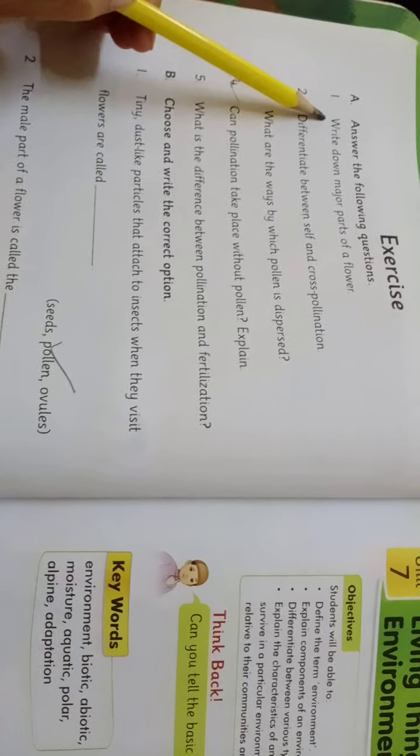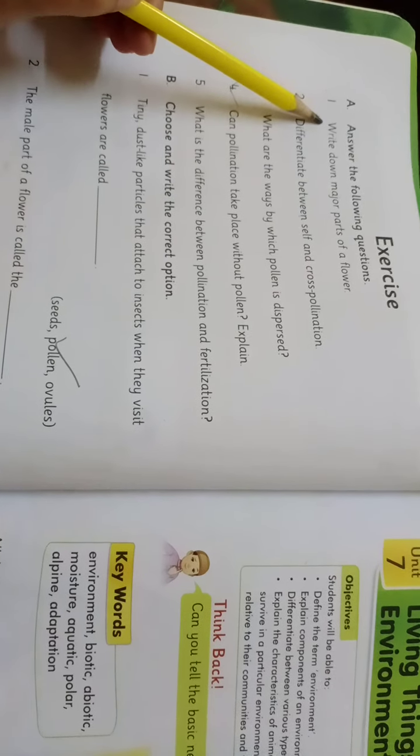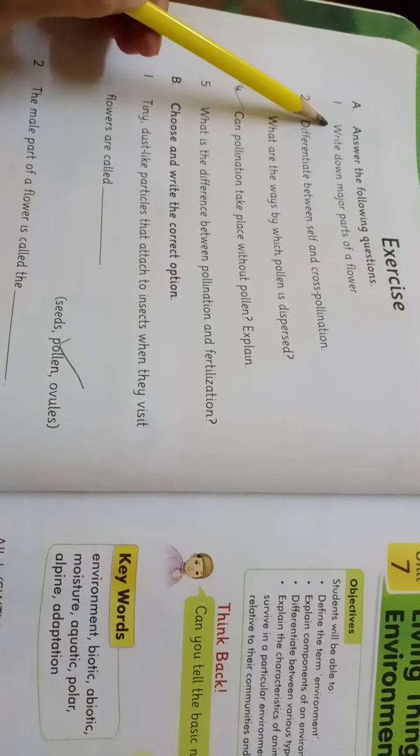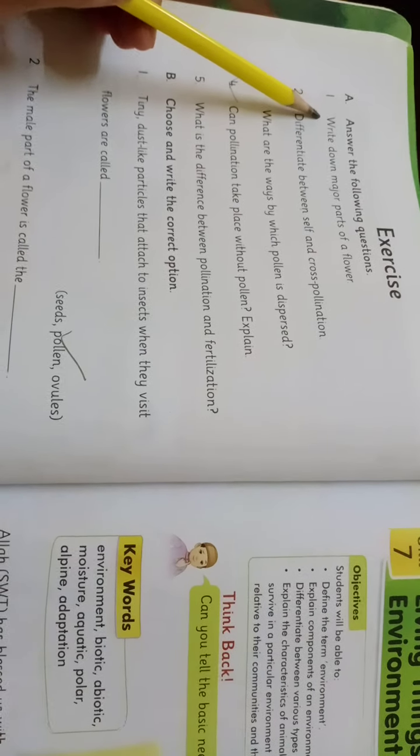So the first question is: write down major parts of a flower. Humne padha tha ke four parts jo hain wo har flower mein common hote hain. So number one is sepals, number two is petals, number three is stamen that is male part of a flower, and pistil that is female part of a flower.